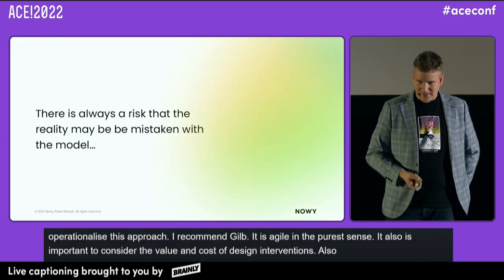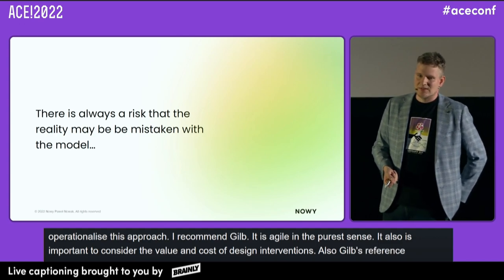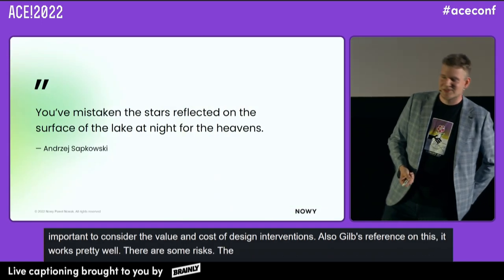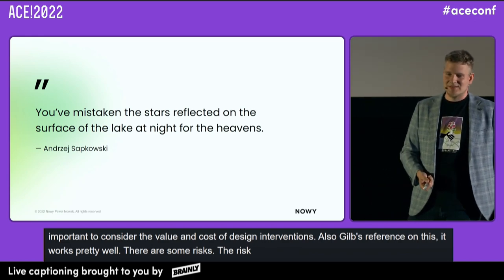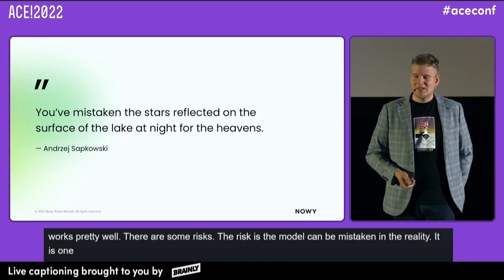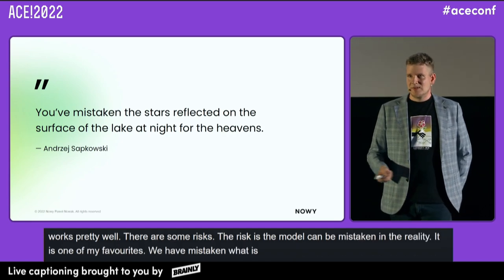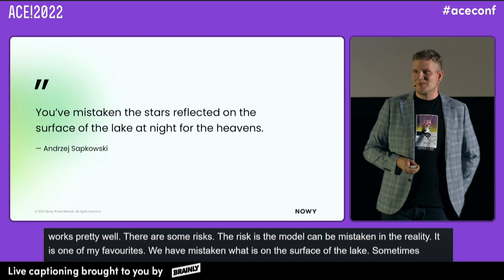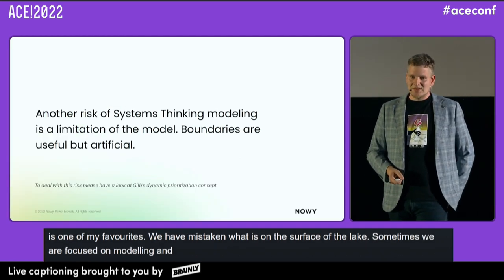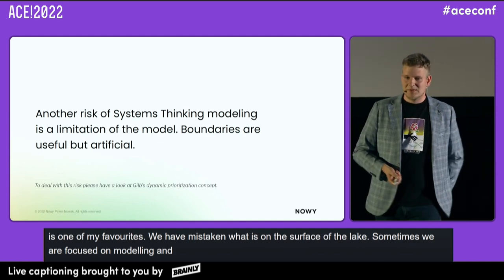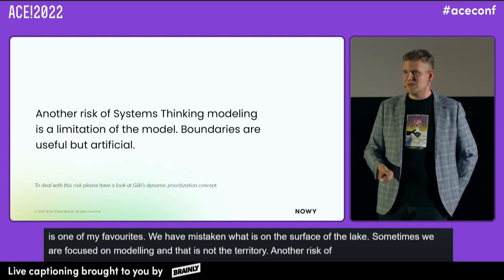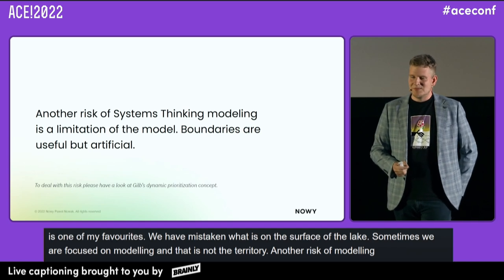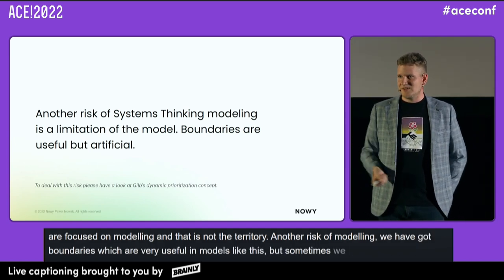Of course there are risks. The risk is that the model can be mistaken for reality. As one of my favorite authors wrote: 'You've mistaken the stars reflected on the surface of the lake at night for the heavens.' Sometimes we are so focused on modeling that we forget the map is not the territory. Another risk of systems thinking modeling is the limitation of the model — we have boundaries which are very useful, but sometimes we go too far with modeling and start creating silos.